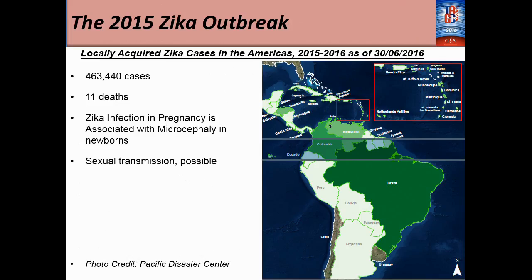We see that the Zika virus has a way of causing life-threatening symptoms. The 2015 Zika outbreak — this picture is based on reports from the Pacific Disaster Center. Currently, as of the 30th of June this year, Zika has caused over 11 deaths and over 463,000 cases so far. The major problem with Zika is Zika in pregnancy because of the association with microcephaly — small brain development — and the child is born with brain problems.